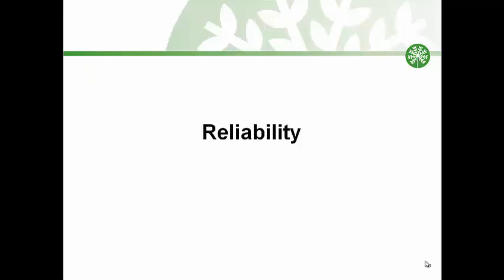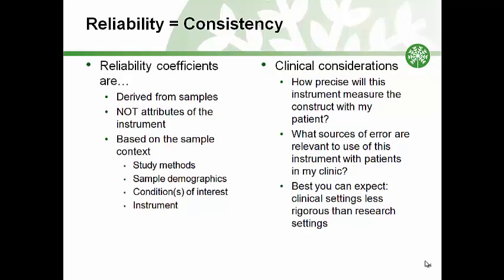Let's move from clinical utility to the topic of reliability. Reliability in clinical measurement is about consistently using instruments with precision. However, instruments function differently under different circumstances and are less precise due to greater variation in clinical settings. Clinicians constitute a critical part of clinician-rated instruments, so we want instruments with research studies that resemble our patients and settings. We must follow the administration protocol as closely as possible. Reliability coefficients are derived from samples — they are not unchangeable attributes of the instrument but are based on the sample context. The best you can expect in a clinical setting is less reliability than would be obtained in a rigorous research setting.